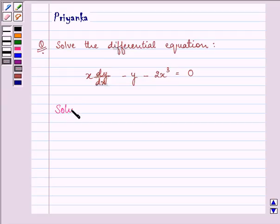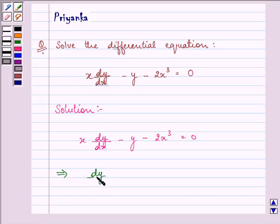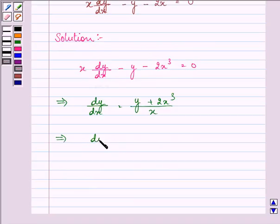Let us quickly proceed with our solution. Rewriting the given differential equation, now here we can write this as dy/dx equals y plus 2x³ whole upon x, which can further be written as dy/dx equals y/x plus 2x².